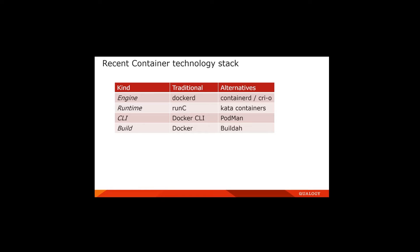Looking at the traditional container technology stack and its alternatives: for the engine, Docker (dockerd) runs as a daemon on Linux, but alternatives include containerd or CRI-O. For the runtime, the traditional one is runc, but you can replace it with the Kata runtime for Kata containers. For the CLI, many projects use Docker CLI, but you can replace it with Podman, which is more secure. For building images, you can use Docker build, Podman, or another tool called Buildah. There are many alternatives and you need to pick the right one for your project.